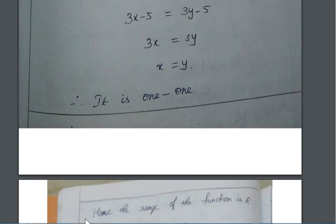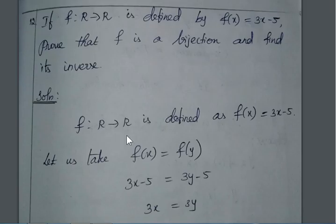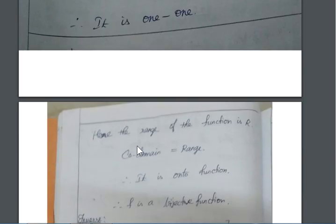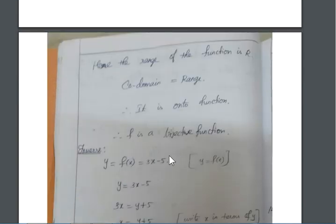And the next one is, hence the range of the function in R. Here, see that range of the function is also R. Both the things are R to R. So, range of the function is R. Codomain is equal to range. Codomain is equal to range, it is onto. And then next, therefore, f is a bijective function.